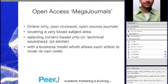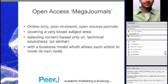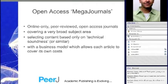Let me back up a bit because there's a story here. If we talk about open access megajournals — this is what PLOS-1 is, which I used to publish before I went to PHA. PLOS-1 is regarded as a megajournal; it's probably the archetypal megajournal and certainly the biggest. This year it's going to be publishing about 31,000 articles — about 2,500 a month, which is huge. An open access megajournal is an online peer-reviewed open access journal that covers all subject areas, and it selects content based only on technical soundness. That third bullet is most important, with a business model that allows each article to cover its own cost.